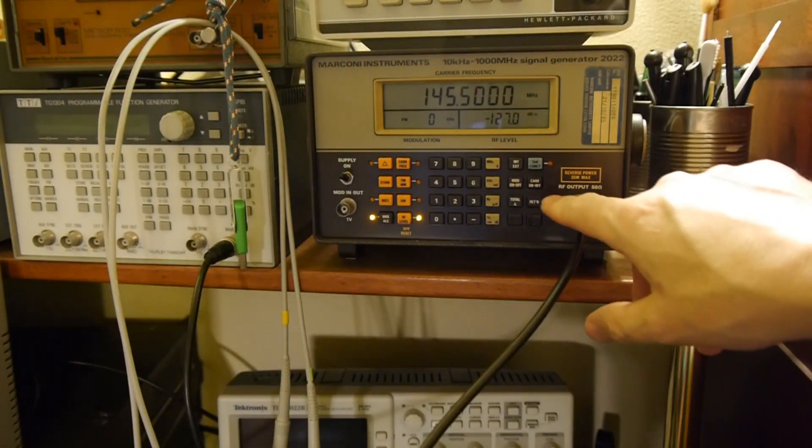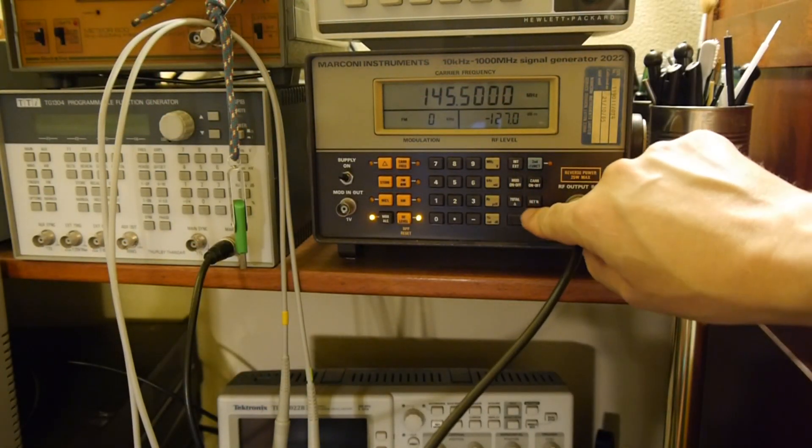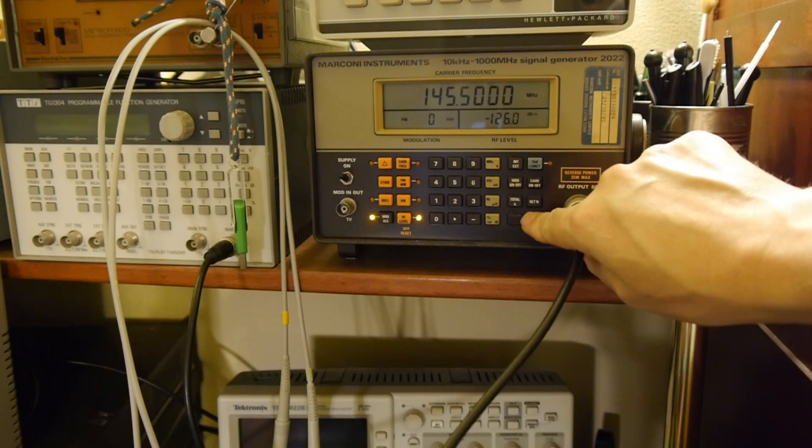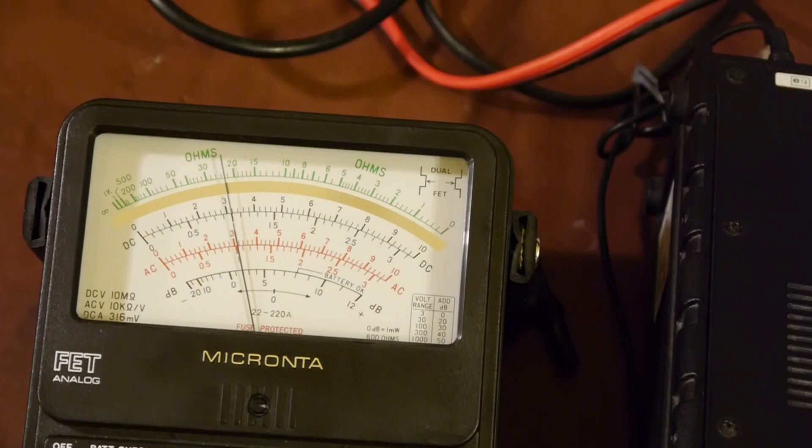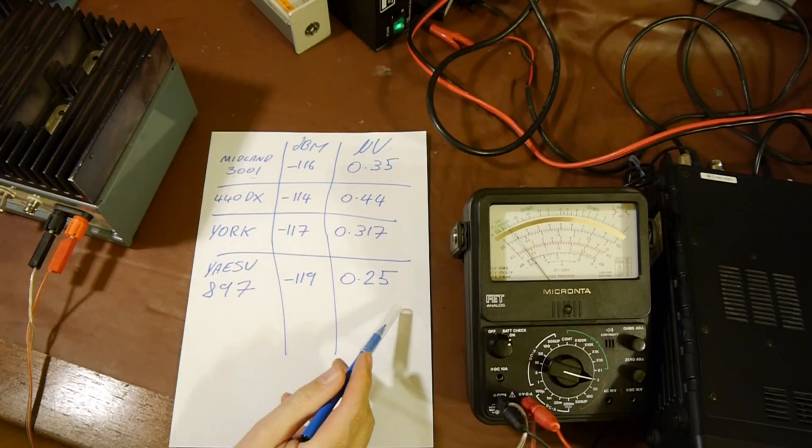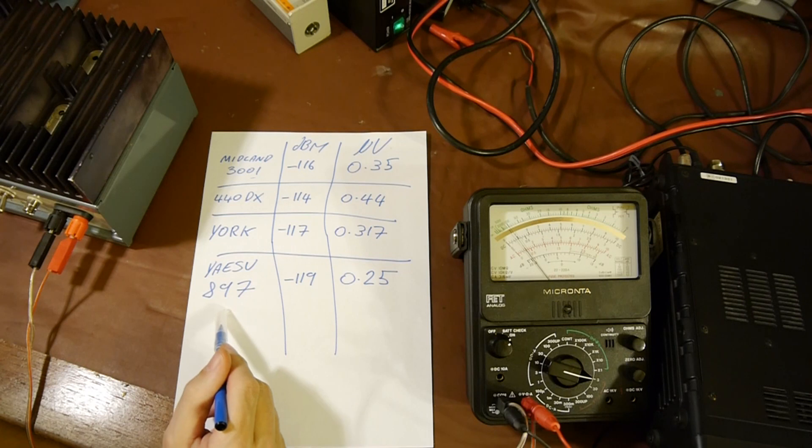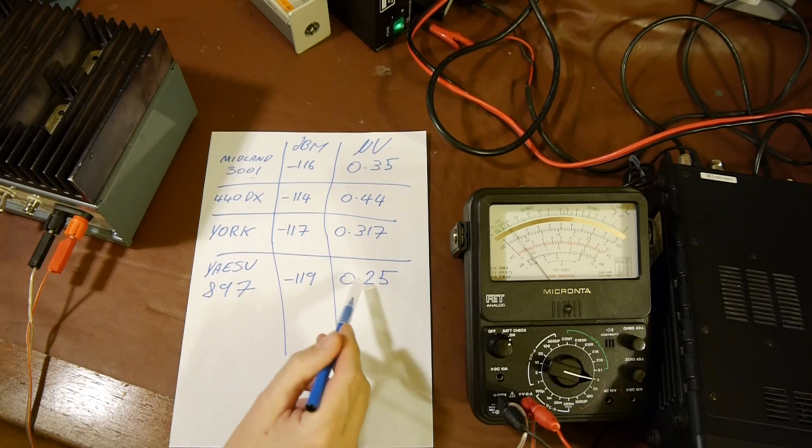Let's switch our signal generator on and we'll just start to increase the signal level now. So coming in at number one we've got a new winner which is the Yaesu 897 and that's come in at a signal level of minus 119 dBm or 0.25 microvolts. Now I guess that's not unexpected but still quite interesting.